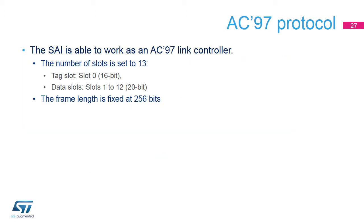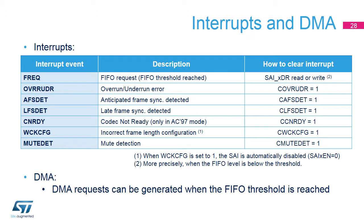The SAI is able to work as an AC97 link controller. When this protocol is used, the frame length, slot number, and slot length are set by the hardware. Several events can be enabled to generate interrupts. The WCKCFG event can be used to inform the user that the frame length of the SAI has been improperly programmed. This feature only makes sense in master mode.